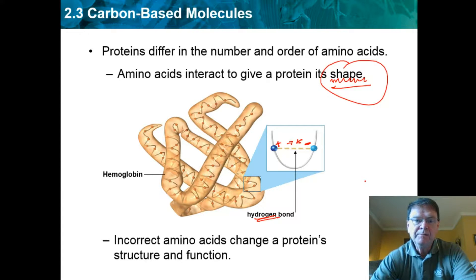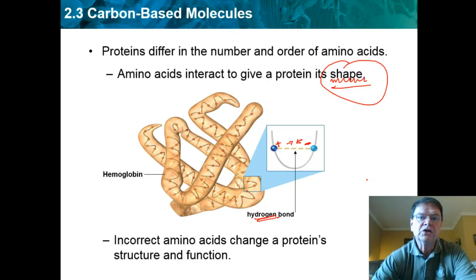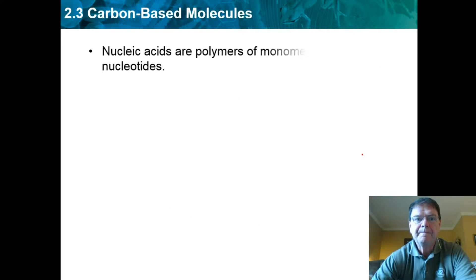If the amino acids for some reason are out of sequence, that's going to alter the shape and therefore the function of the protein. Sometimes a protein may still function if one particular amino acid is wrong. Other times the protein will completely unfold or never come together in the first place. The sequence of those amino acids is critical to the function and the shape of that protein.